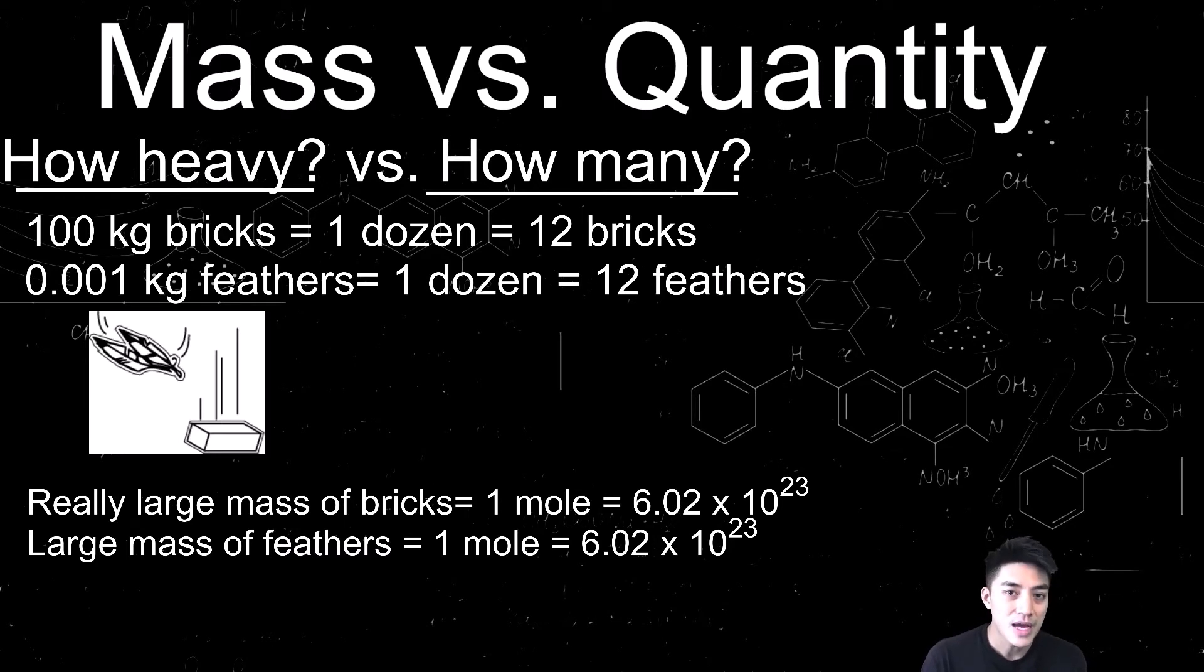So the point is, the masses might be different, but the quantities are still the same, and they're united by a single unit. In this case, it's the dozen. But in chemistry, we're going to use the mole.